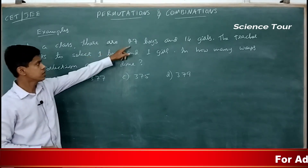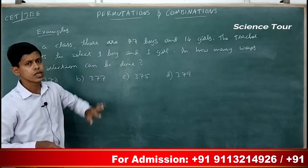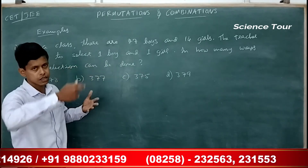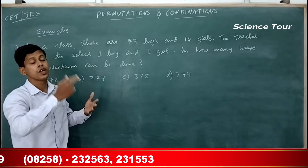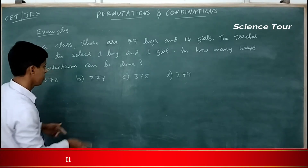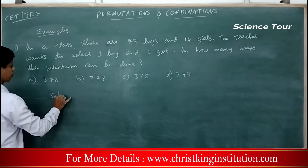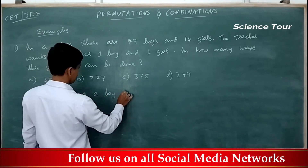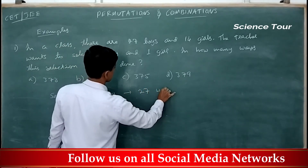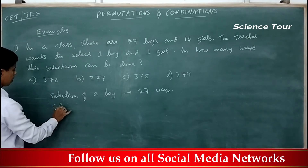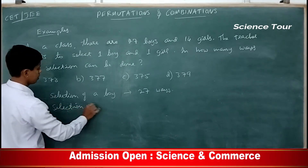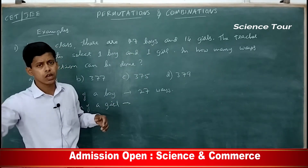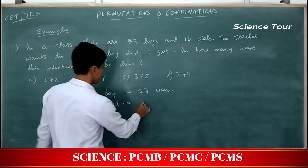How many ways can one boy be selected from 27 boys? You can take the first boy, or the second, or the third — so there are 27 ways. Similarly, how many ways can the selection of a girl be done? In 14 ways — you can select the first girl, or the second, or the third. So 14 ways.